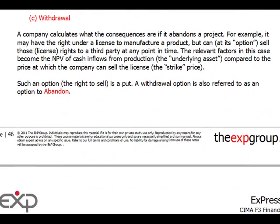The withdrawal or abandonment option is something discussed at the beginning. If you proceed with the project but things go wrong and aren't as planned, you can sell something — for instance, the right to sell a license. This option must be taken into account when calculating your NPV. Even if your cash flows don't go as planned, you will still be able to realize some of the expenditure incurred by liquidating the project, and that needs to be factored into your analysis.